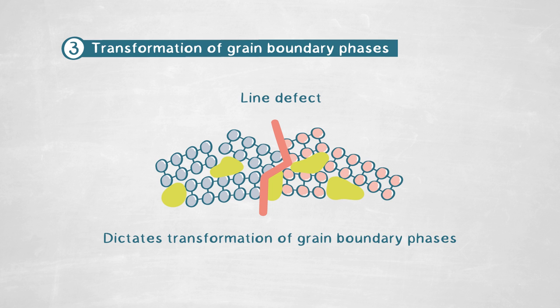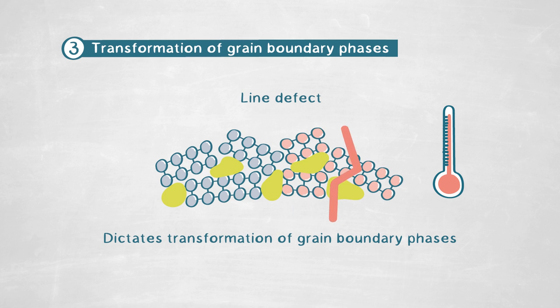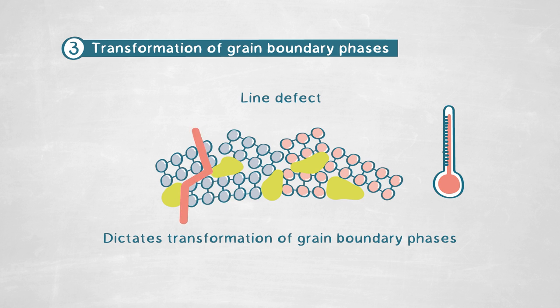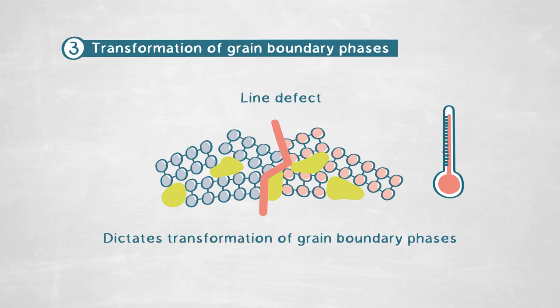This grain boundary phase junction — this line defect — dictates how the grain boundary phases transform into each other. When we treat the material at high temperature, this line defect has to move through the sample. Since its migration is temperature dependent, it stops at an intermediate temperature and freezes in this two-phase state so that we can observe it in the microscope.